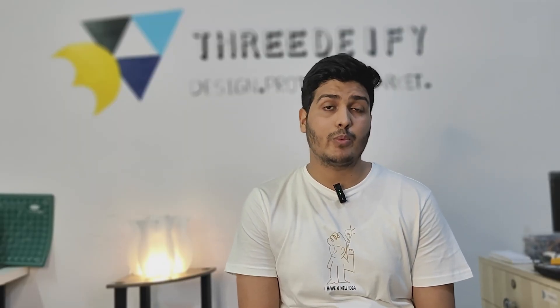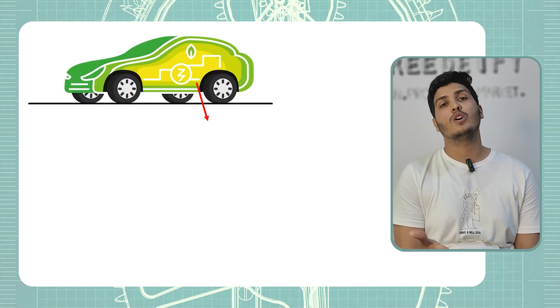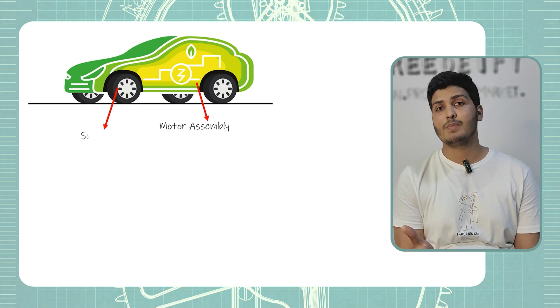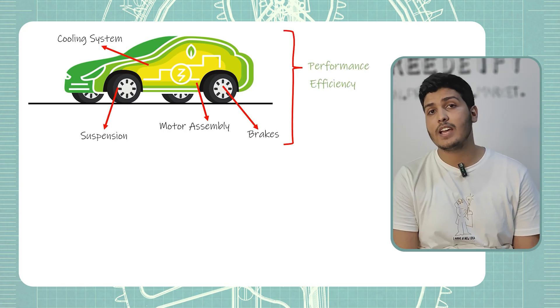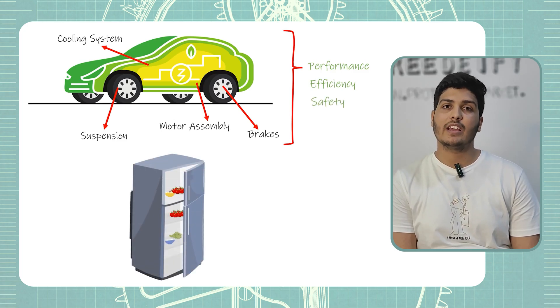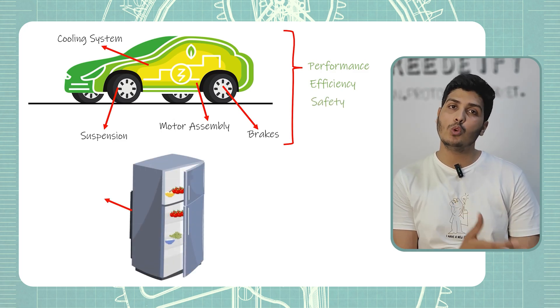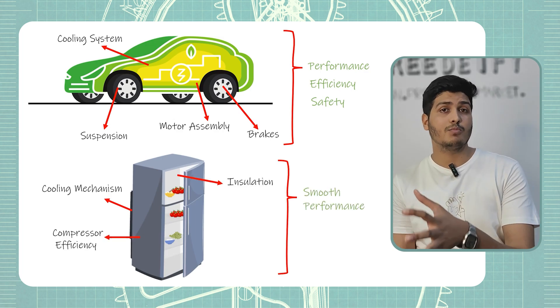And how can it be manufactured to scale? Mechanical engineers are responsible for handling the technical design of the product, working on internal components and mechanisms that make the product function. For example, when designing an electric vehicle we focus on integrating the motor, suspension, brakes and cooling system to ensure efficient performance and safety of the vehicle.